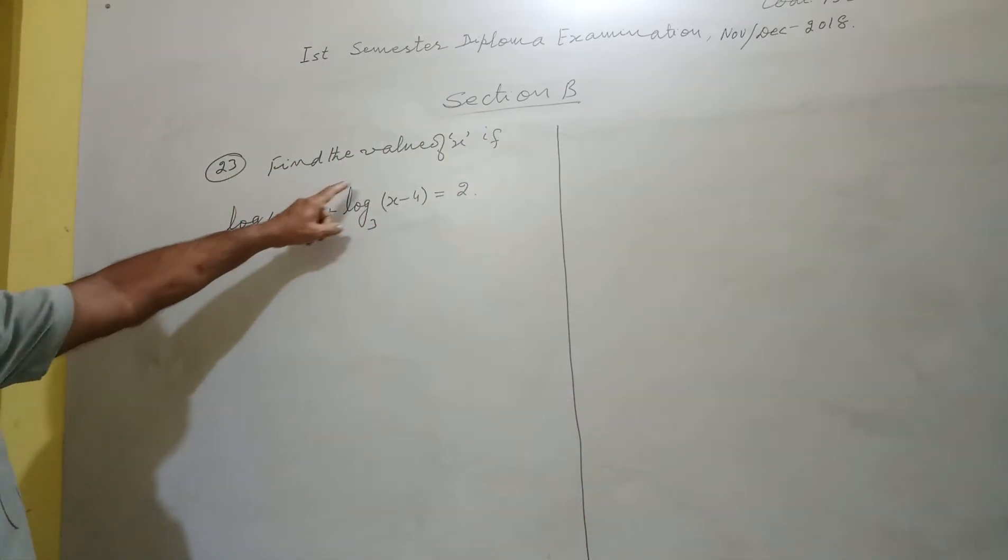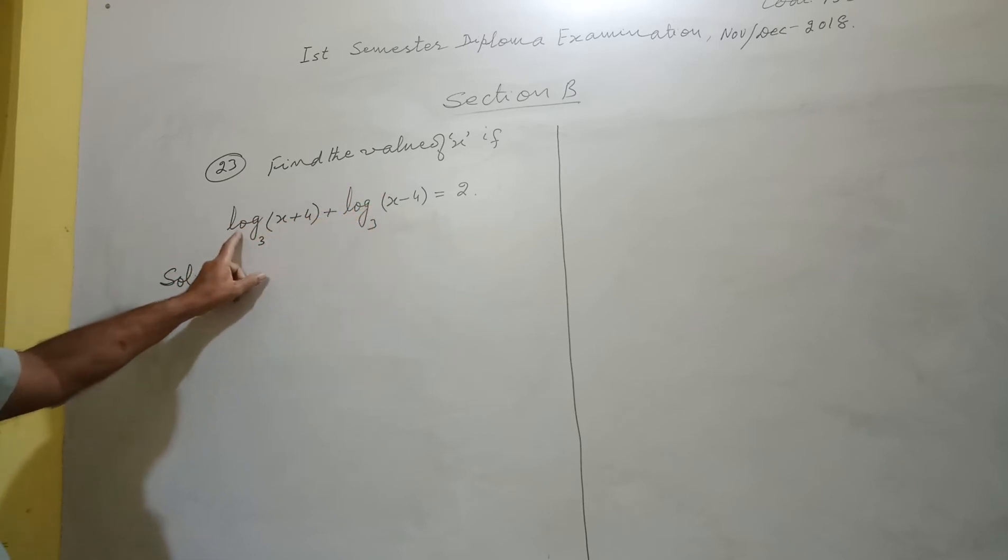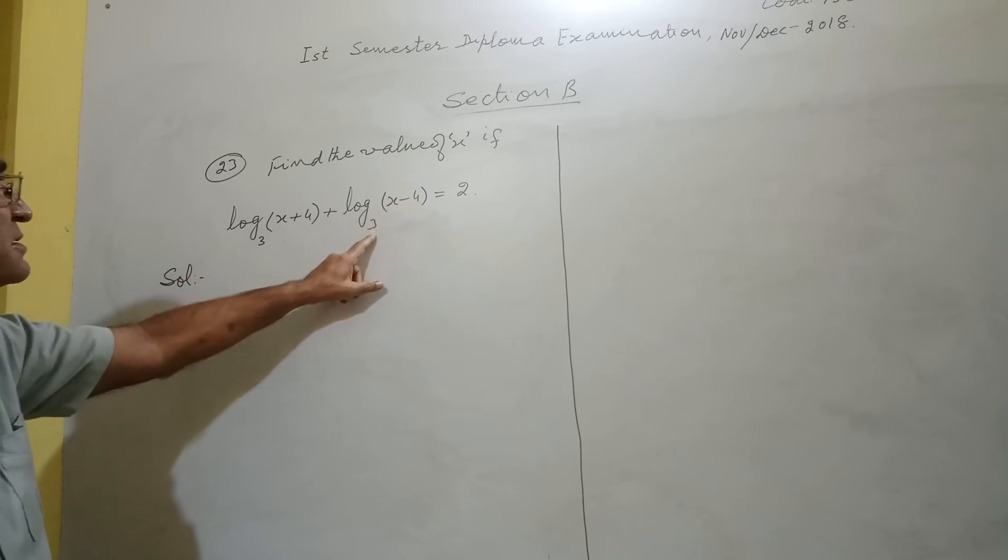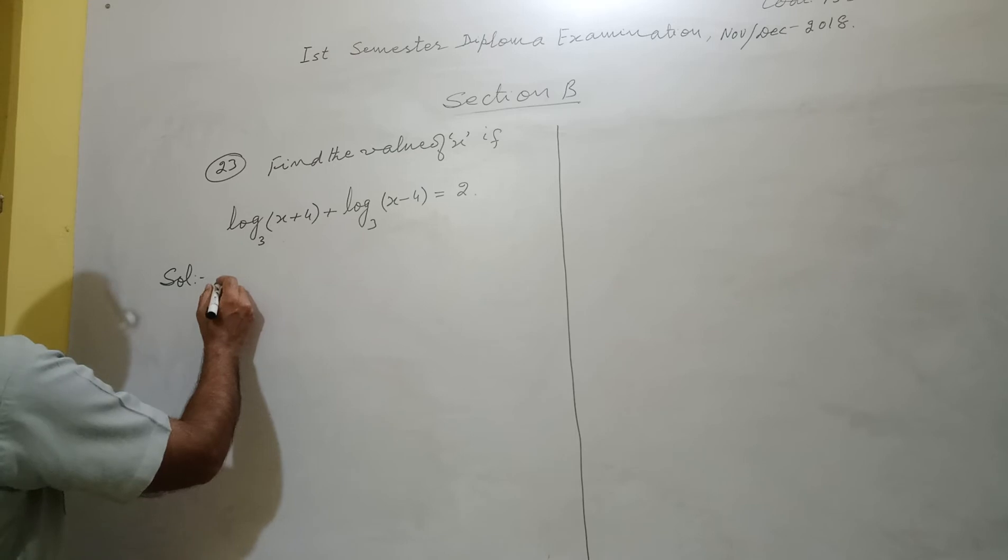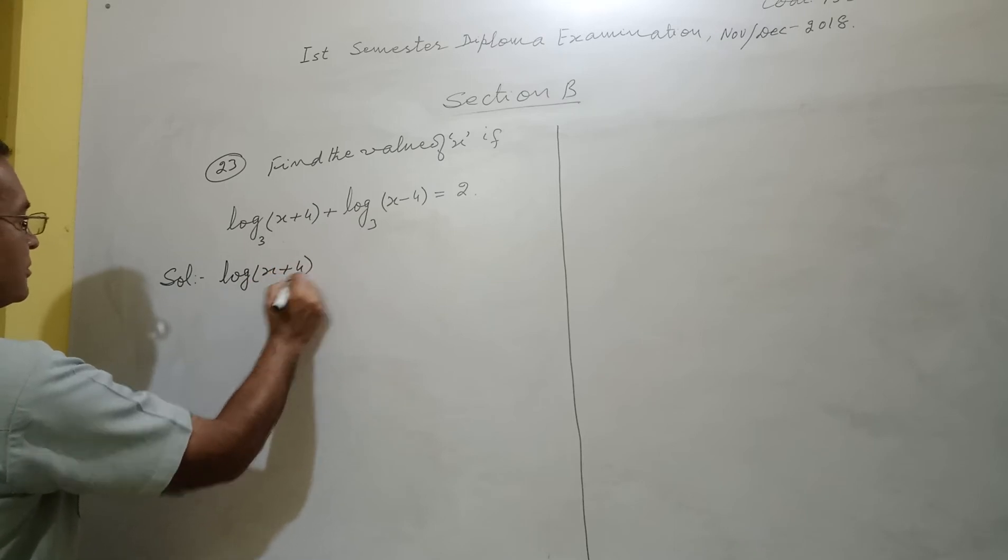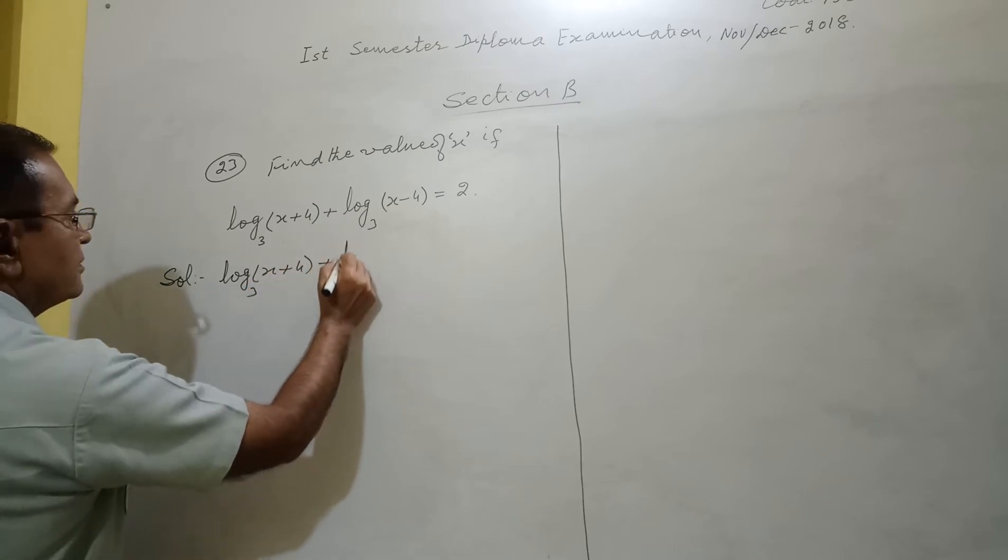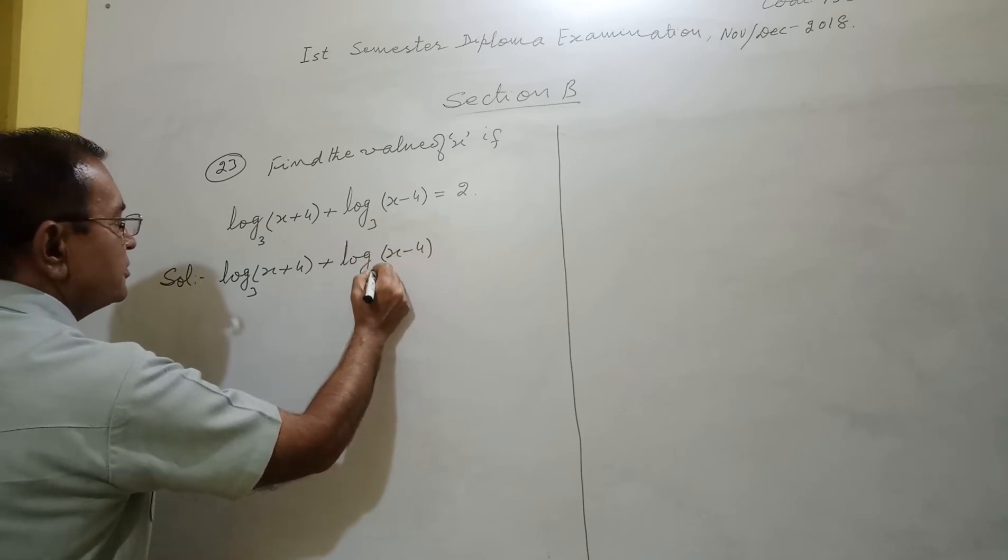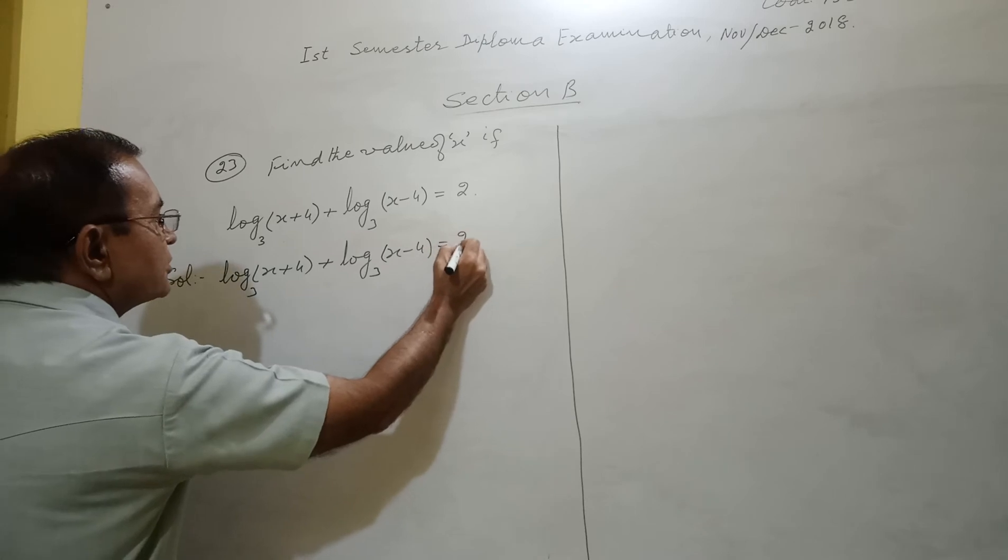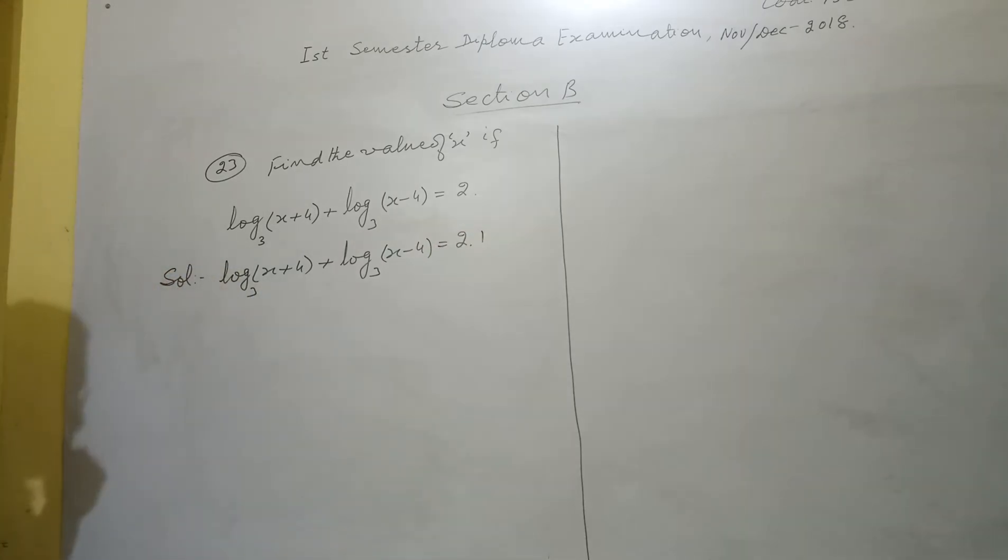Next, 23rd, find the value of x if log of x plus 4 base 3 plus log of x minus 4 base 3 equals 2. How to solve it? Now, left hand side is log x plus 4 base 3 plus log x minus 4 base 3. Put it as 2 times 1.